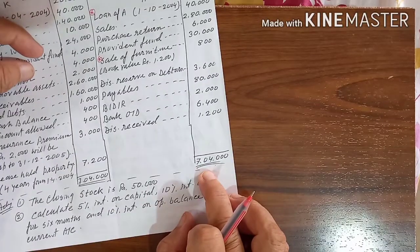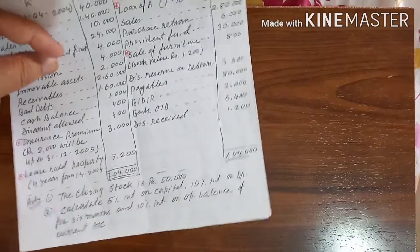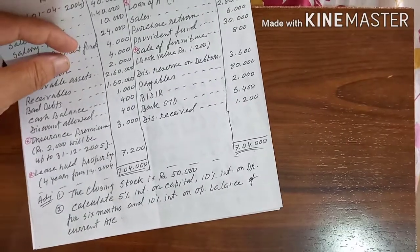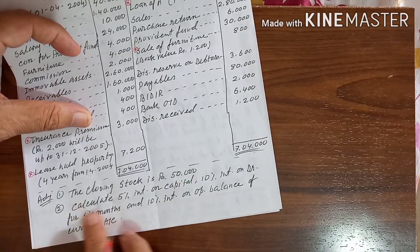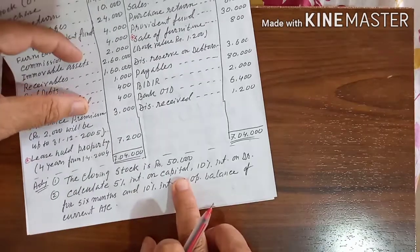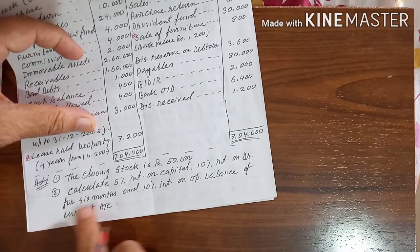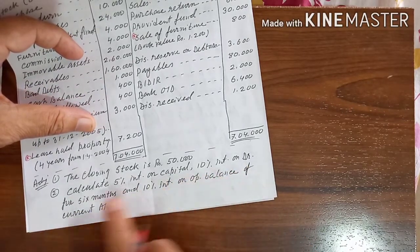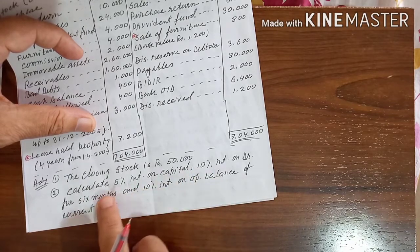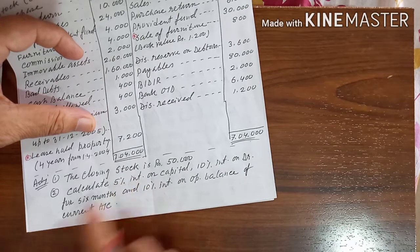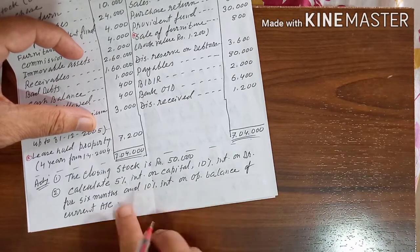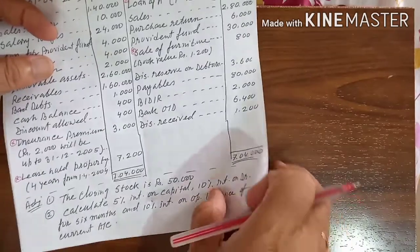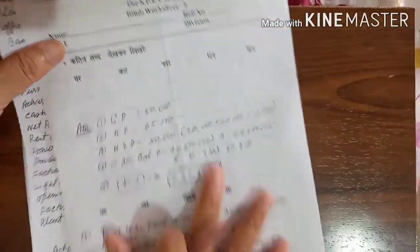Total Rs 7,04,000. Now the adjustments are given. First, the closing stock is Rs 50,000. Second, calculate 5% interest on capital, 10% interest on drawings for six months — interest on drawings to be calculated at the rate of 10% per six months — and 10% interest on the opening balance of the current account.